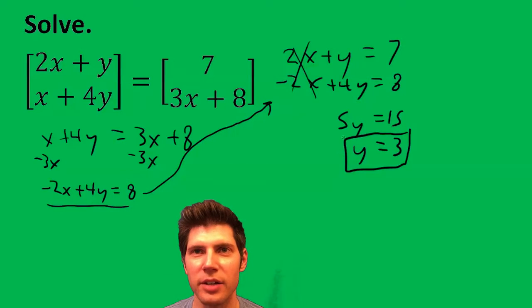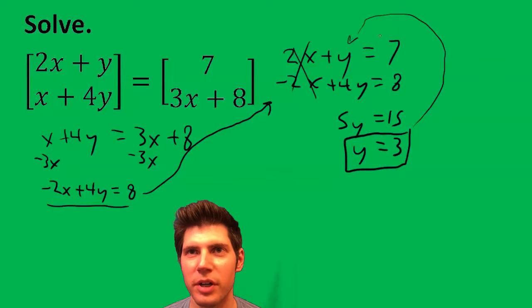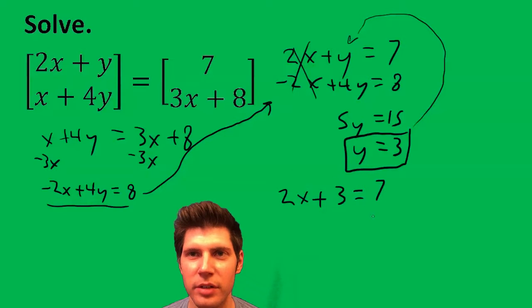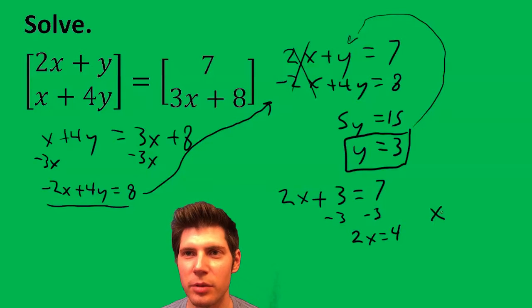And to solve for the x, let's plug the y equals 3 into this original equation right here. 2x plus 3 equals 7 minus 3 minus 3. 2x equals 4. We get x equals 2.